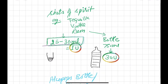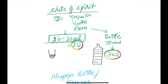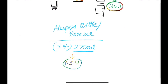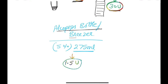Next, shots of spirit like tequila and vodka: 25 to 30 ml is 1 unit, and a 750 ml bottle is 30 units. Bottle of wine was 9 units, but the same 750 ml bottle of shots of spirit is 30 units. Last but not the least, alcopops — also called breezer — has 5% concentration, equivalent to half pint of beer and 1.5 units. This is about units of alcohol, which you can easily learn while taking history.